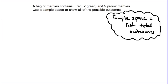The first example states that a bag of marbles contains three red, two green, and five yellow marbles. Use a sample space to show all the possible outcomes. This is a pretty simple situation where we just have one kind of layer to it — the different types of marbles. For this particular example we'll use a list as our sample space, and lists work really well when we have just a simple event.